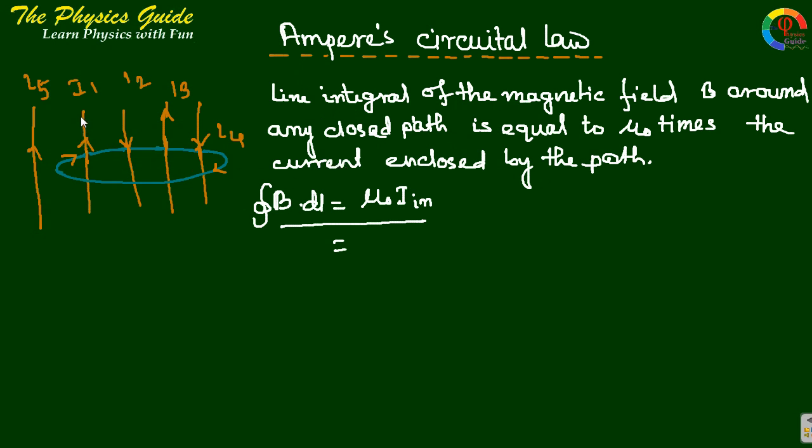To understand this, we have taken 5 current carrying conductors carrying current I1, I2, I3, I4 and I5. We know that for each current carrying conductor there should be magnetic field, and this magnetic field is everywhere from 0 to infinity.